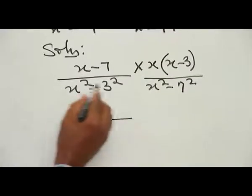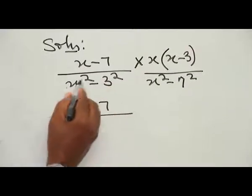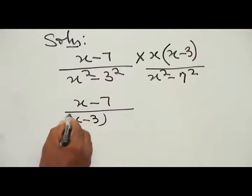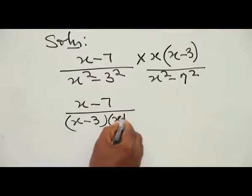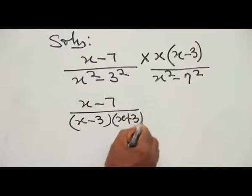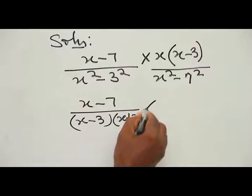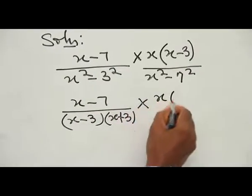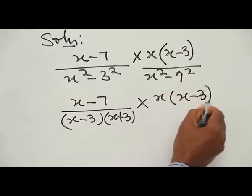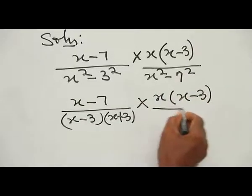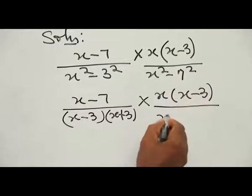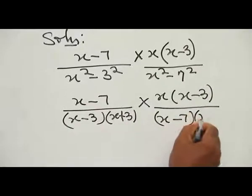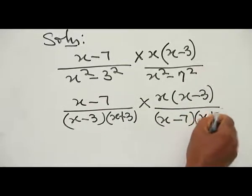Moving on, S squared minus 49 is written as S squared minus 7 squared — also a perfect square. We apply the difference of two squares to get (S minus 7)(S plus 7). We now have S minus 7 in both numerator and denominator, plus S minus 3 canceling with S minus 3.